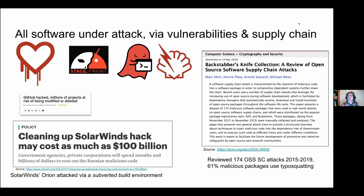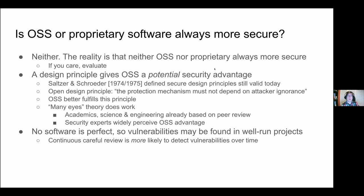All software is under attack — open source and proprietary alike. It's under attack directly via vulnerabilities where it's deployed, and also through supply chains: how software is developed and how it's distributed. Is open source or proprietary software always more secure? The reality is neither is always more secure. There is a principle that gives open source a potential advantage — the open design principle, established back in the 1970s: the protection mechanism must not depend on attacker ignorance. Open source better fulfills this principle, giving it a potential advantage, but potentials are not always realized.